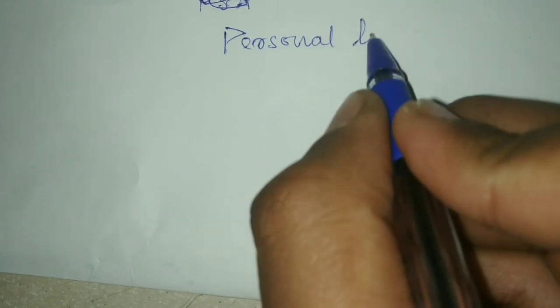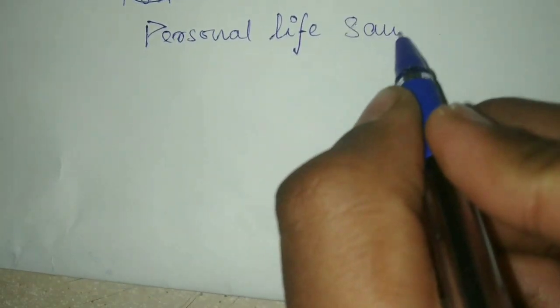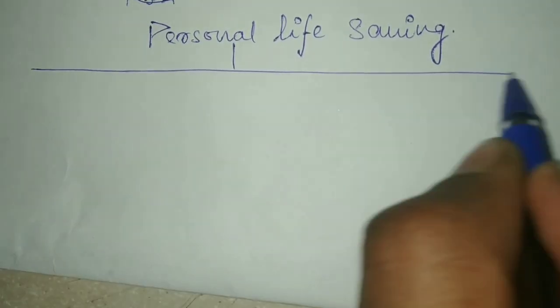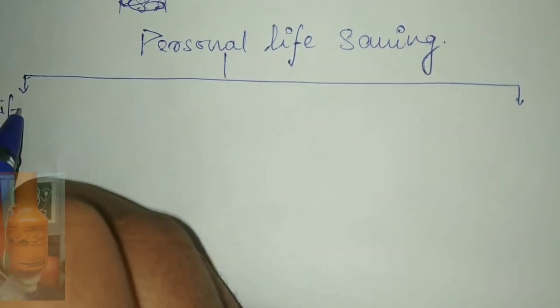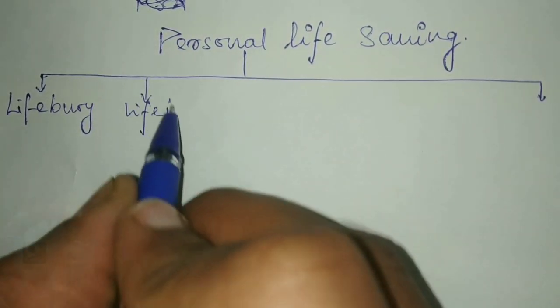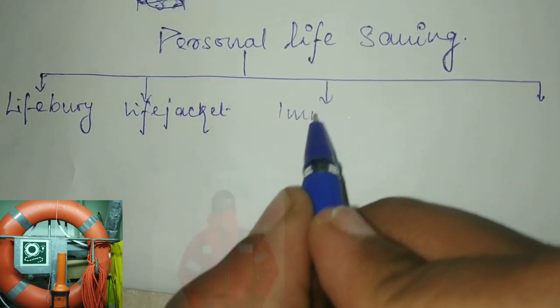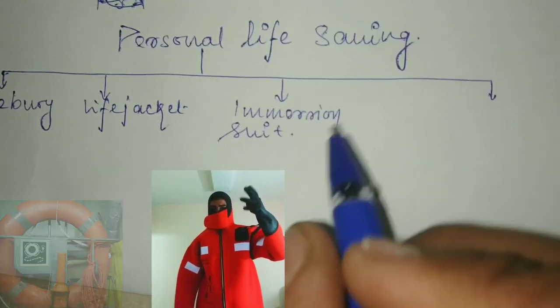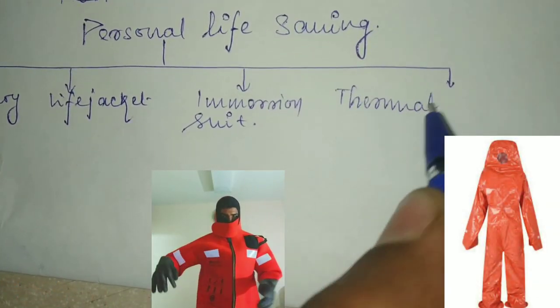Personal life-saving appliances are also divided into different types. The first one is the lifebuoy, second is the life jacket, third is the immersion suit, and the last one is the thermal protective aid.